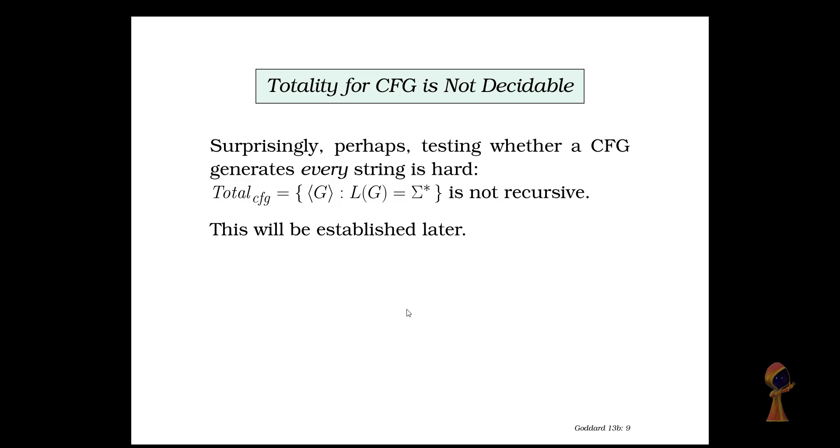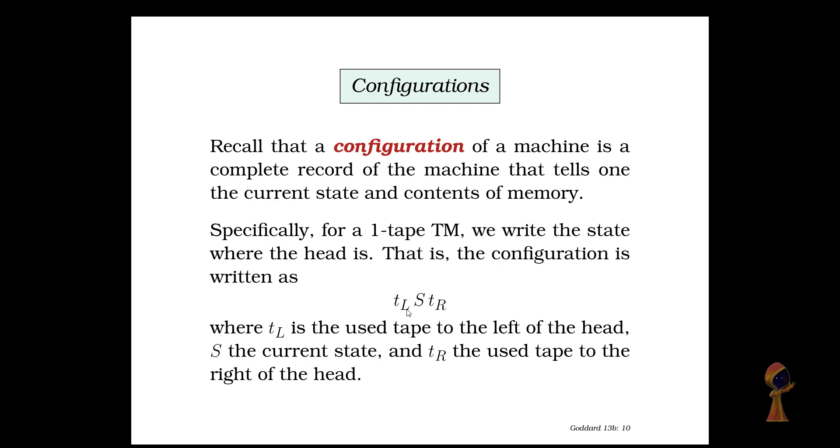One thing which is surprising is that the totality for a context free grammar is not decidable. What does that mean? It means testing whether a CFG generates every possible string. This is a very hard problem. Total CFG is not recursive. This result is something which we will establish later on.